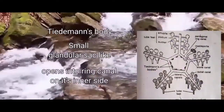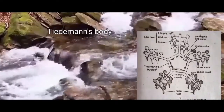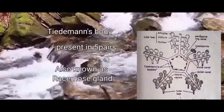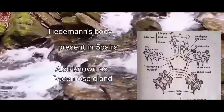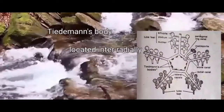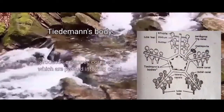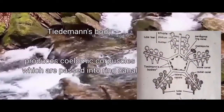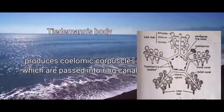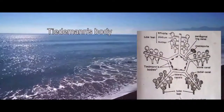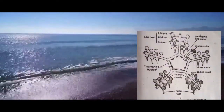Tiedemann's bodies are small glandular sac-like structures opening into the ring canal on its inner side. They are present in five pairs, also called rhesus glands, and are present interradially. They produce coelomic corpuscles which are passed into the ring canal. Coelomic corpuscles are similar to amoeboid cells, that is, similar to blood cells of humans.